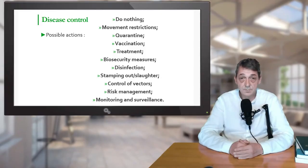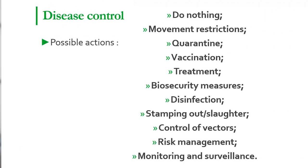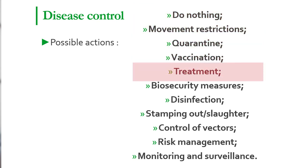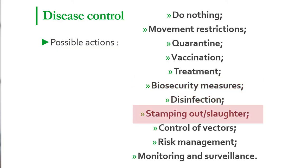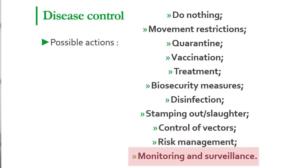Control strategies usually depend on the type of disease and available funds. Some possible actions include: first, doing nothing — sometimes possible when a country lacks sufficient financial resources for control measures or when control measures are more expensive than the impact of the disease. Other possibilities are movement restriction, quarantine, vaccination, medical treatment, improvement of biosecurity measures — which in recent years has received increasing attention from competent authorities — as well as disinfection, stamping out and slaughter, control and monitoring of vectors, and risk management and follow-up measures including monitoring and surveillance.